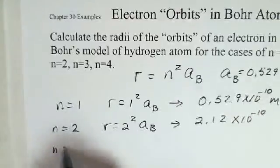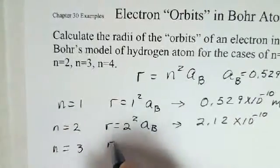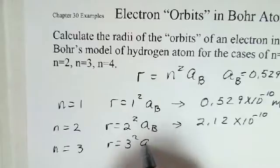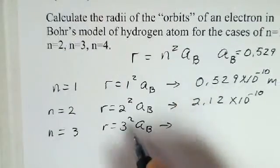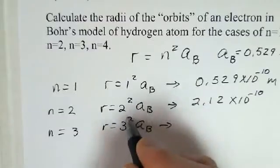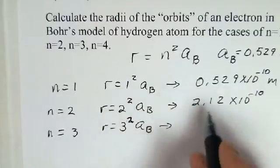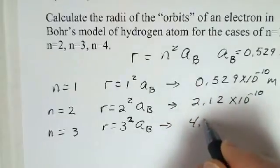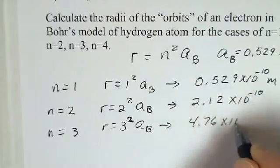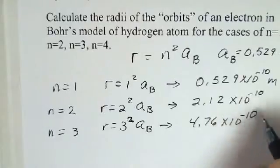And what about n equals 3? 3 squared times the first Bohr orbit radius. So I have a 9 times the basic Bohr radius value, so 4.76, 10 to the minus 10, all these in meters.